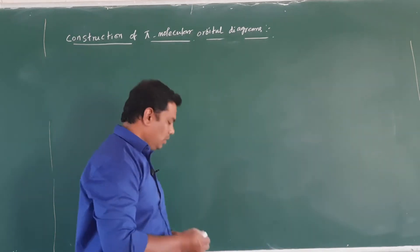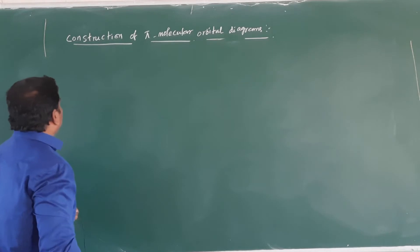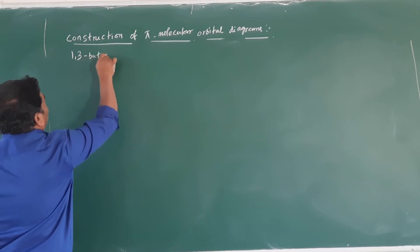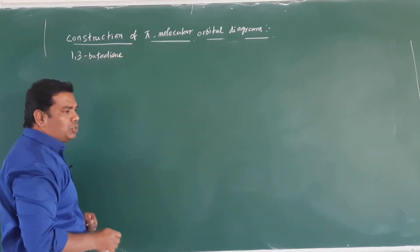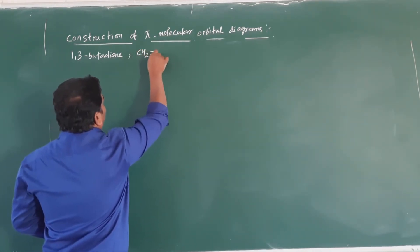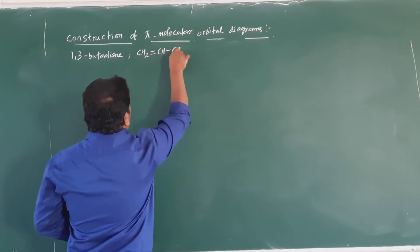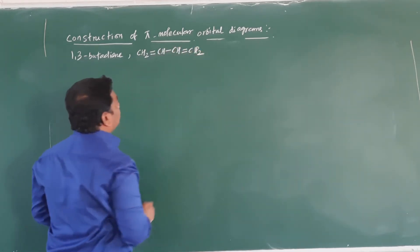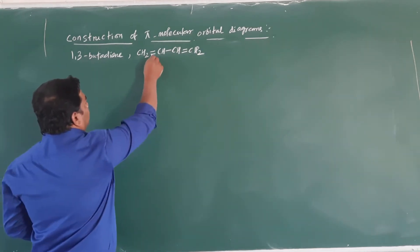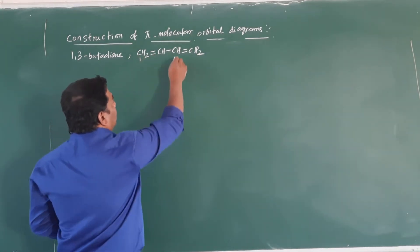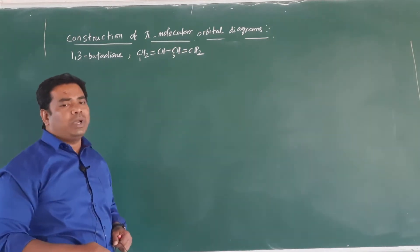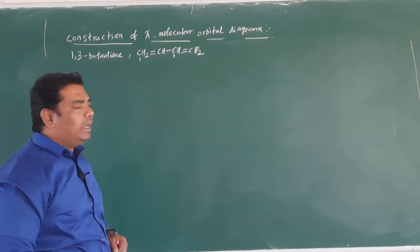We will look at 1,3-butadiene and benzene. First we will construct 1,3-butadiene. 1,3-butadiene is a conjugated diene, which means alternative pi bonds are present. The structure is CH2=CH-CH=CH2. The double bond is present at the first carbon and at the third carbon, which is why it is called 1,3-butadiene. There are 2 pi bonds, which is why it is called butadiene.